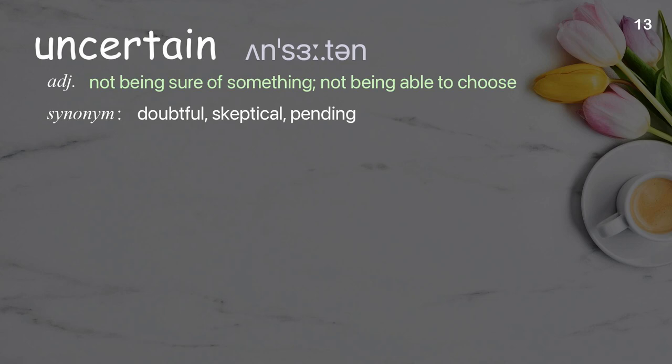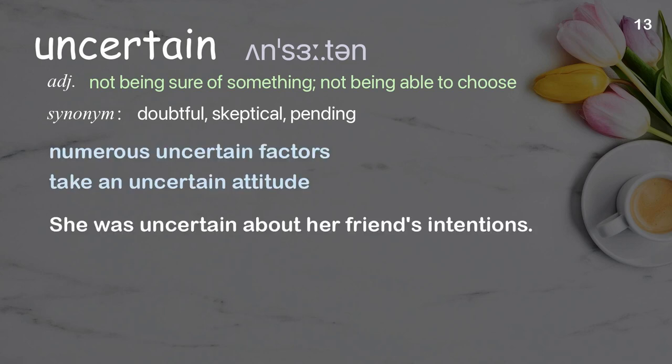Uncertain: not being sure of something; not being able to choose. Examples: numerous uncertain factors, take an uncertain attitude. She was uncertain about her friend's intentions.